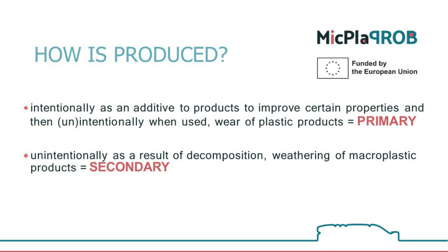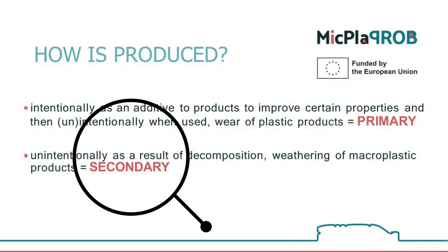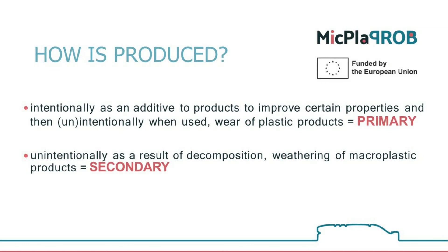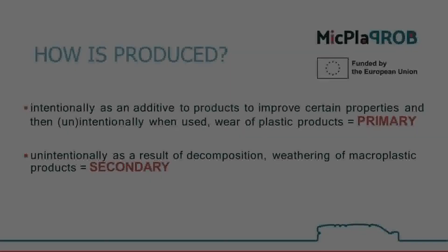Primary microplastics also include deliberate or even unintentional wear of plastic products. On the other hand, we talk about secondary microplastics when they are formed unintentionally due to decomposition, weathering, and decay of macroplastic products. In the case of secondary microplastics, the central problem might be improperly disposed or discarded plastic material.